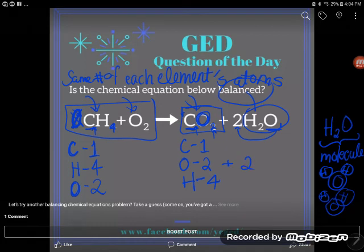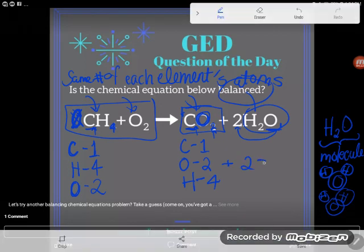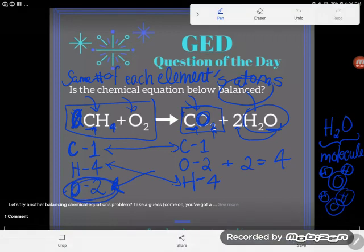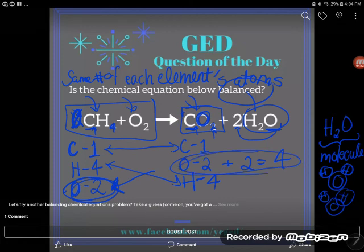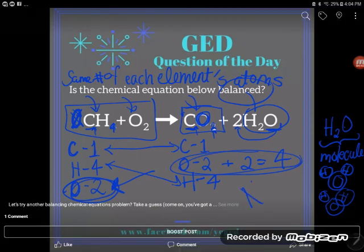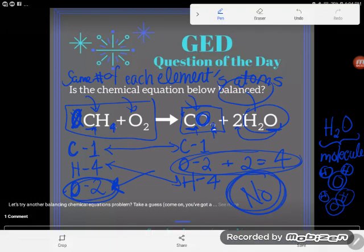So now take a look: I have one atom of carbon on the left, one on the right. I have four atoms of hydrogen on the left, four on the right. But on the left-hand side, I actually have two total oxygen atoms, whereas on the right-hand side, I ended up with four total oxygen atoms. This equation is not balanced. If you find any element that has a different number of atoms, your equation is not balanced.